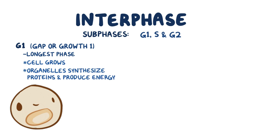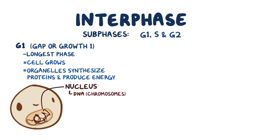Inside the cell nucleus, there's our DNA, organized as chromosomes. And during G1, each chromosome is made up of a single, thin spaghetti of DNA, called a chromatid.